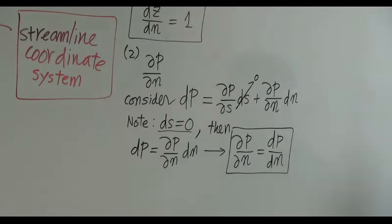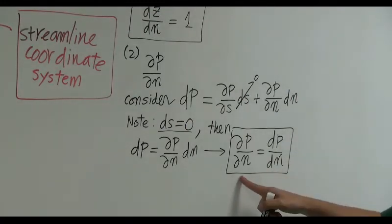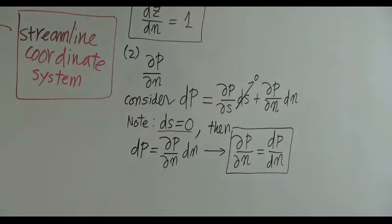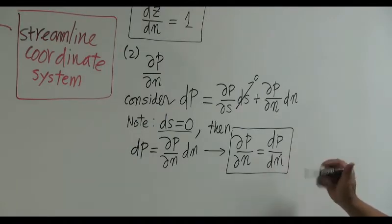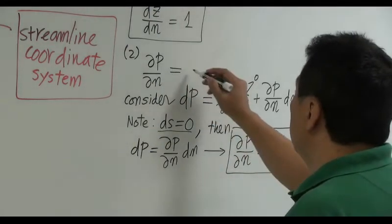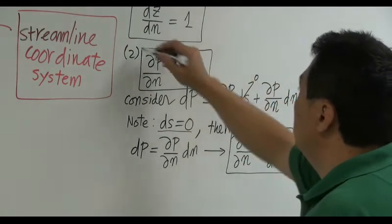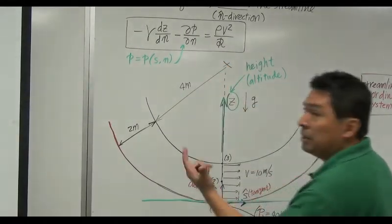This is a significant change. The partial derivative cannot be integrated because pressure depends on two variables. But the ordinary derivative dp/dn represents pressure change purely in the n direction — you can integrate that. So ∂p/∂n equals dp/dn, and in the original equation the partial becomes an ordinary derivative. That's great news because we can integrate in the direction of n.